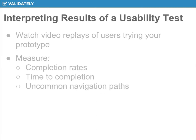You also want to measure time to completion and uncommon navigation paths. When you design things, you have a good sense of what the most common navigation path would be. Did people get through it, but is it taking them really long — much longer than it should? Are they clicking around, doing extra steps, getting lost, and then ultimately finding it? Or is it really clean and smooth for them?